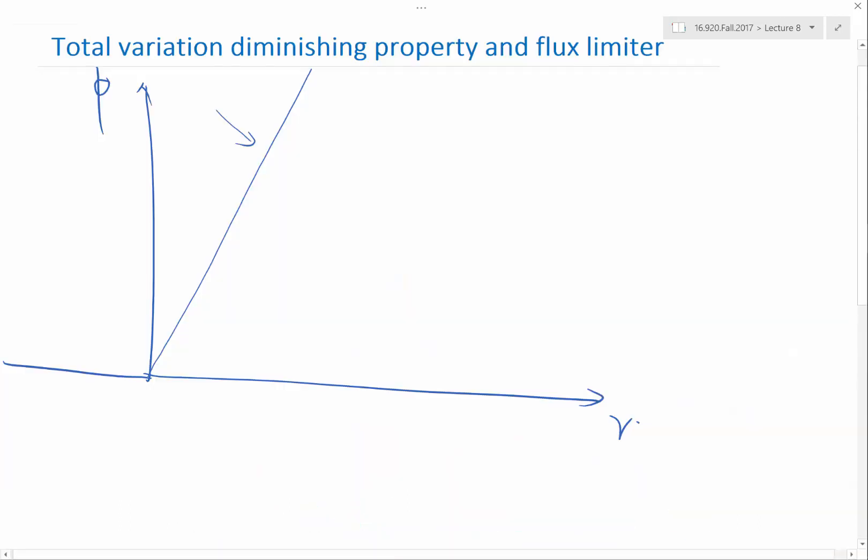So basically, the properties we have discussed say that if R is negative, I can only be phi equal to 0. When R is equal to 1, my phi should be exactly 1.